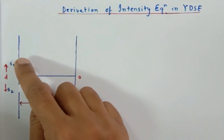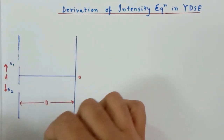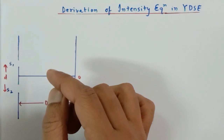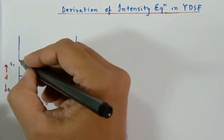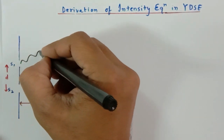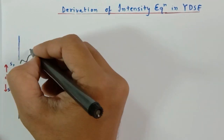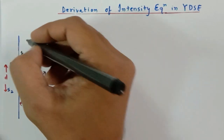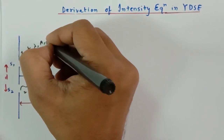As we know, these are two sources S1 and S2, and these two are coherent sources. The light coming from them will have the same frequency, amplitude, and wavelength — everything would be the same. I am going to show you two waves over here: this is wave one and this is wave two. These two waves will have the same frequency, wavelength, amplitude, and intensity.